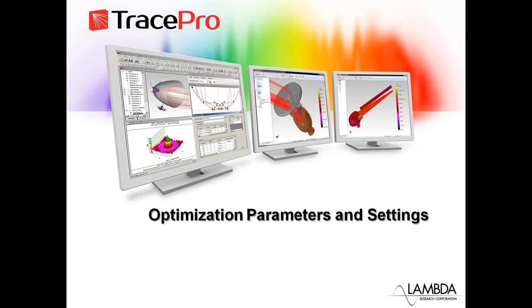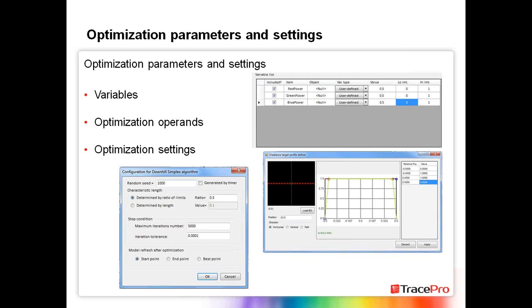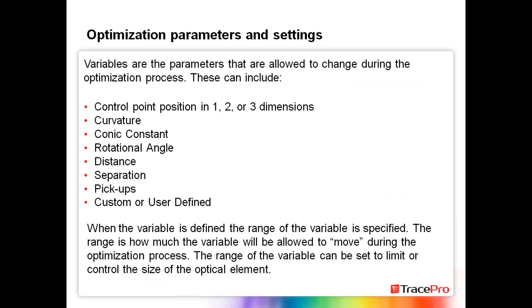Now I want to talk about the optimization parameters and settings in TracePro and how you can set those up. There are three main things: variables, optimization operands, and optimization settings. Variables are the parts you allow to move during the process. The optimization operand is the goal — your target. The settings are what's used during the optimization process to generate the actual optimized result. Variables can include control point position in one, two, or three dimensions; curvature; conic constant; rotational angle; distance; separation; pickups; custom; or user-defined.